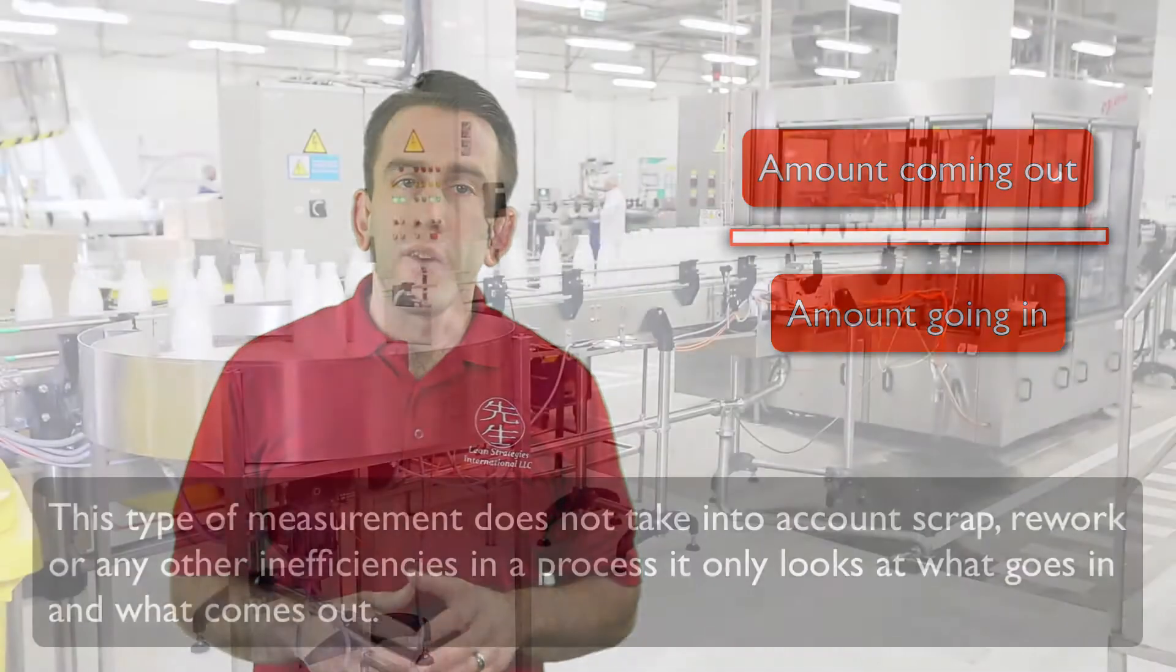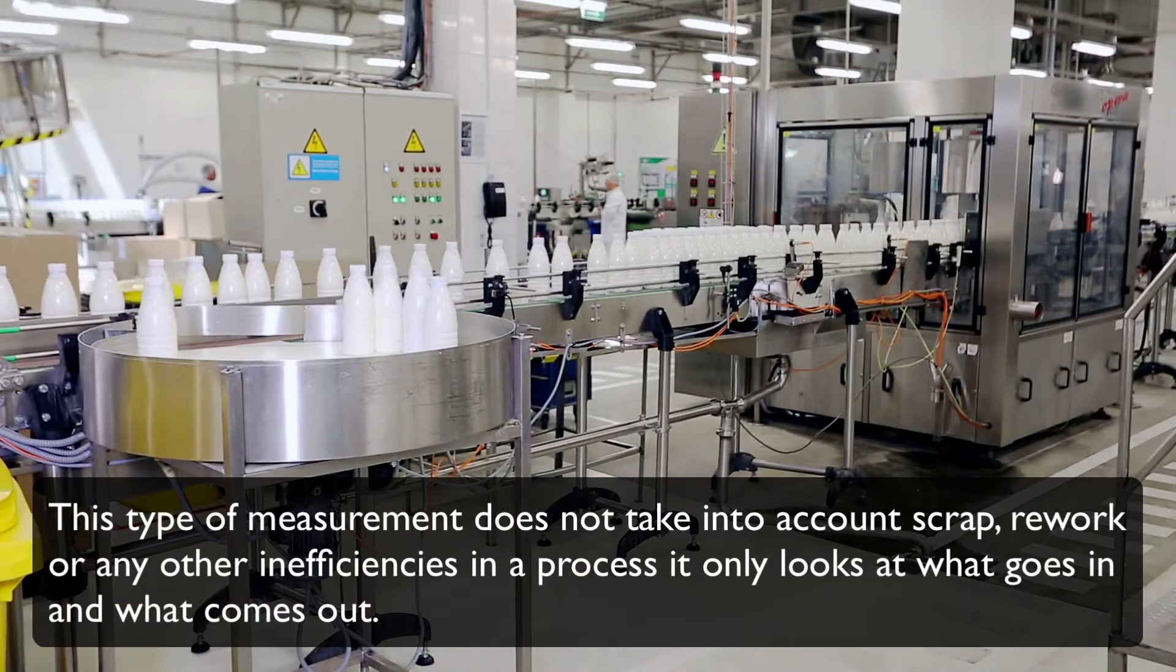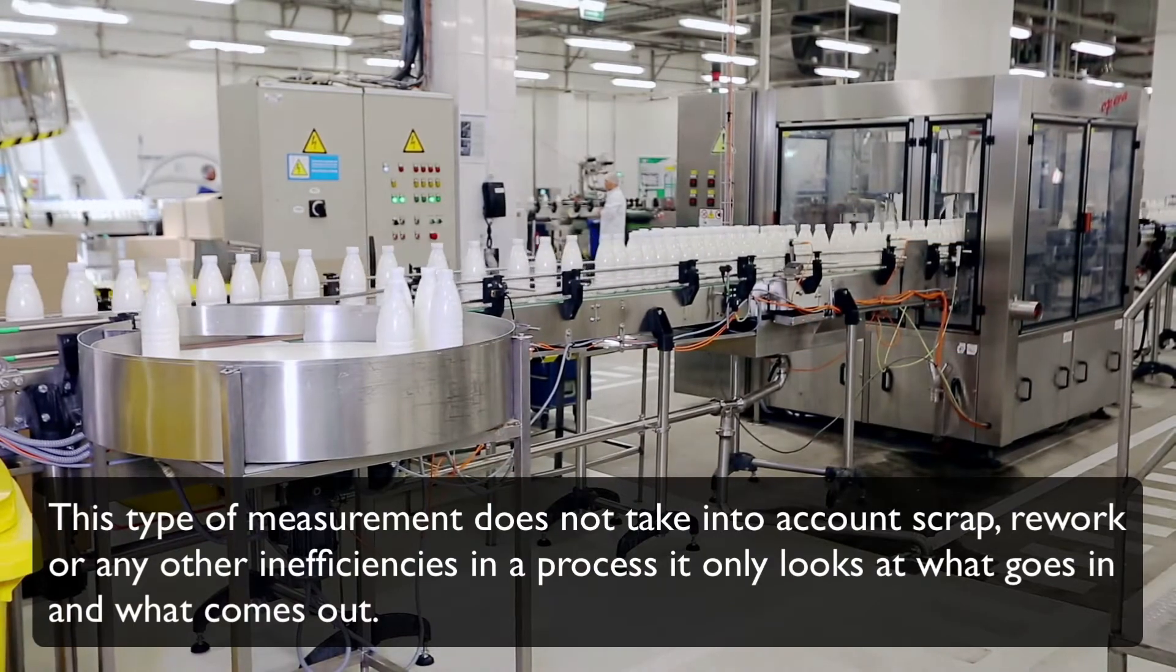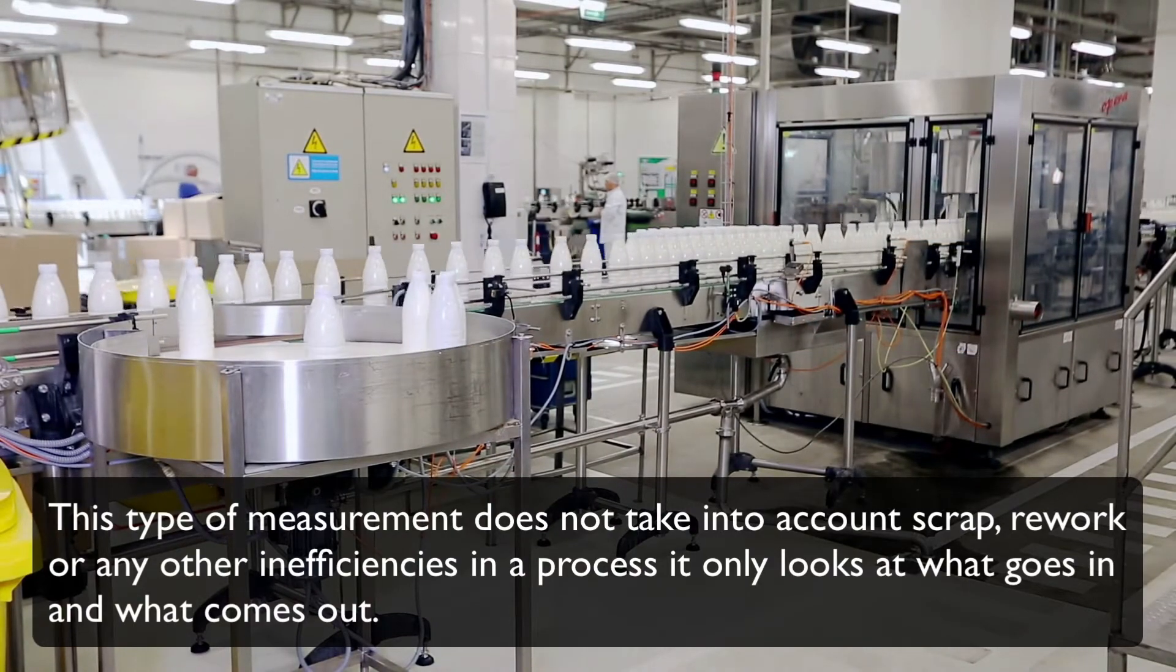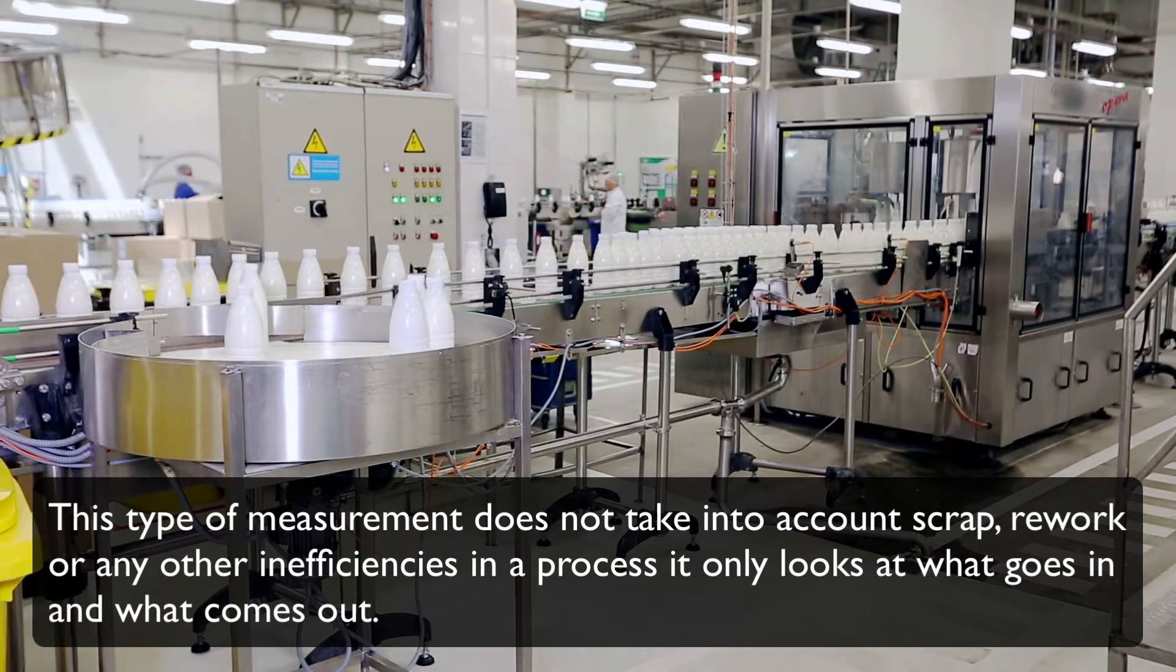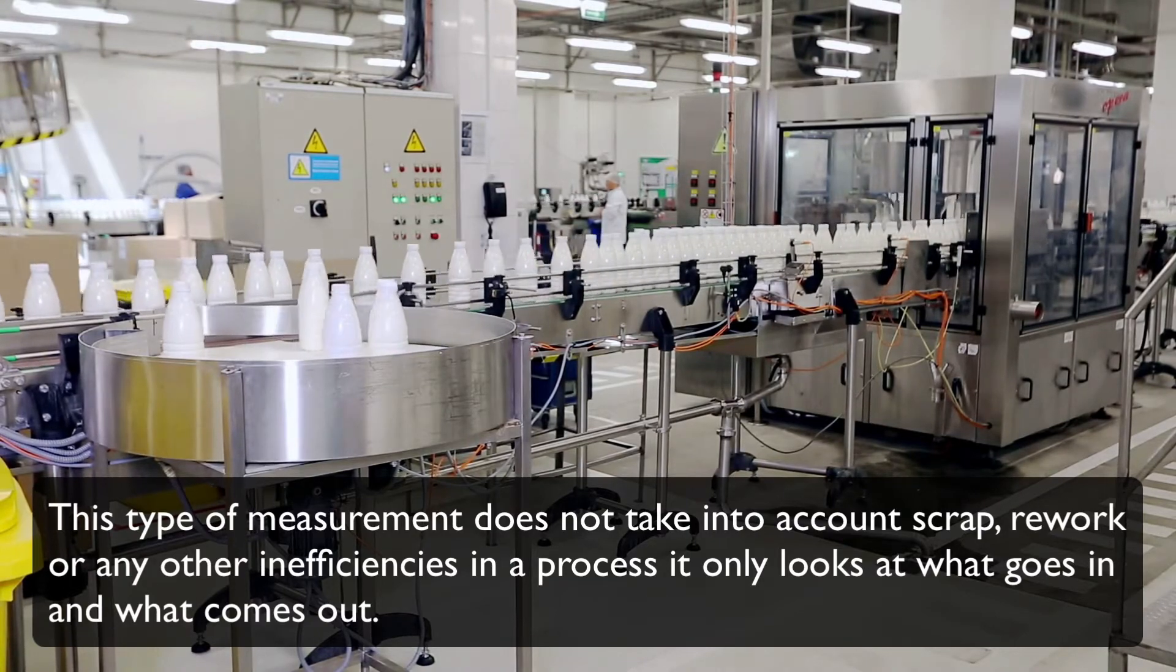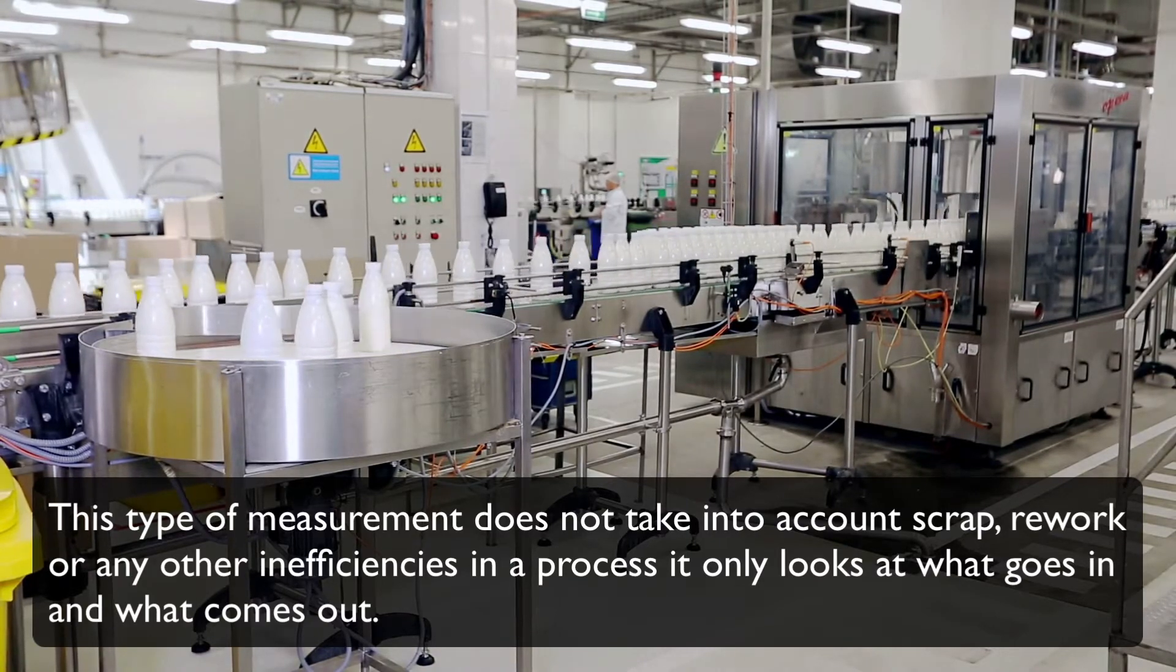This type of measurement does not take into account scrap, rework, or any other inefficiencies in a process. It only looks at what goes in and what comes out. With this in mind, yield may be a good initial measurement to start with, but keep in mind that it does not reveal the hidden factory.